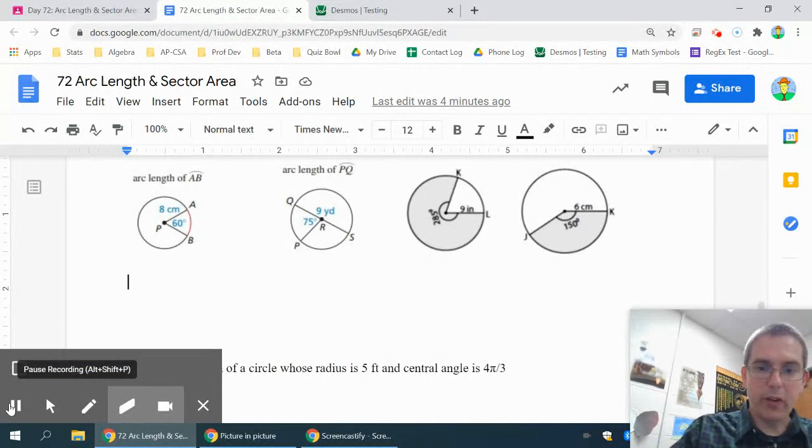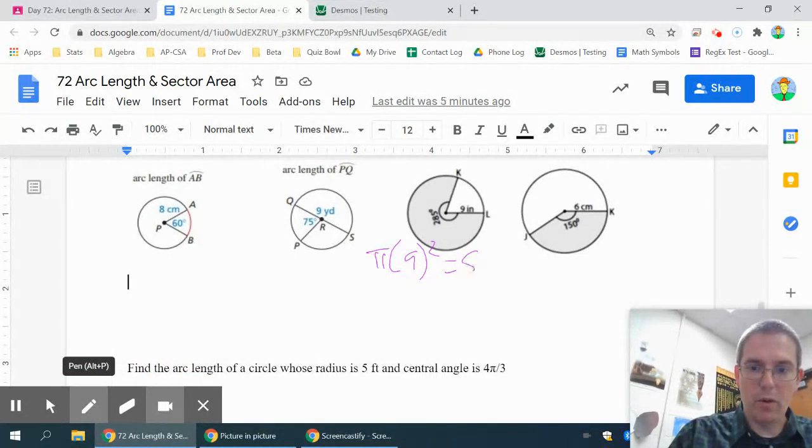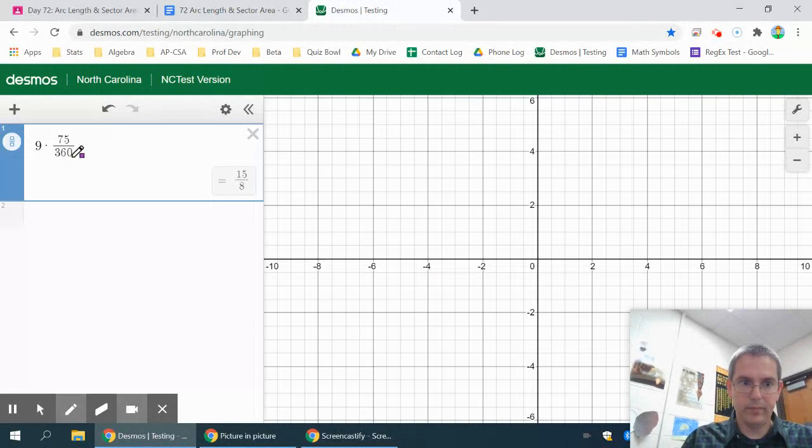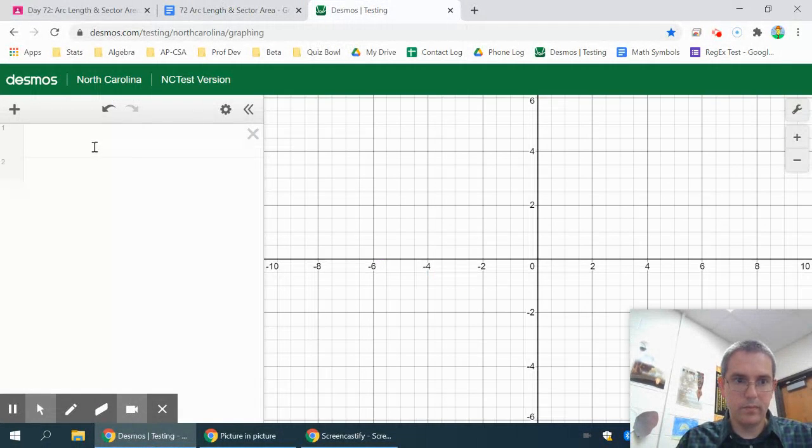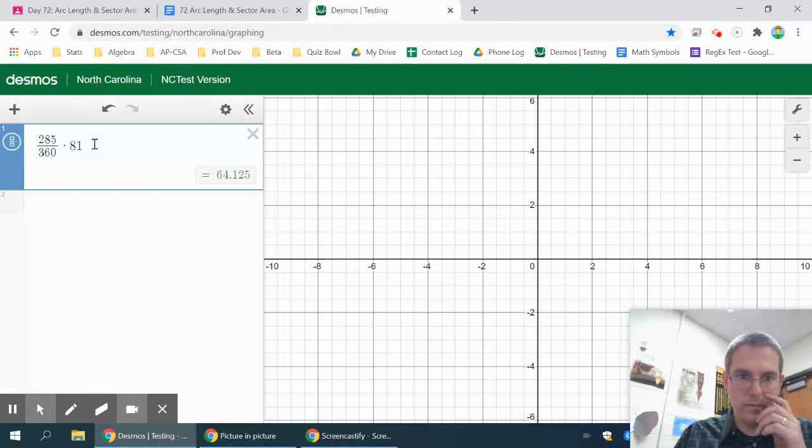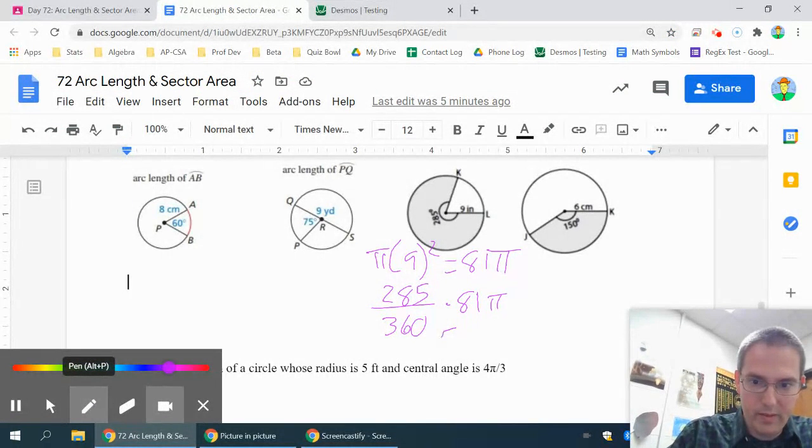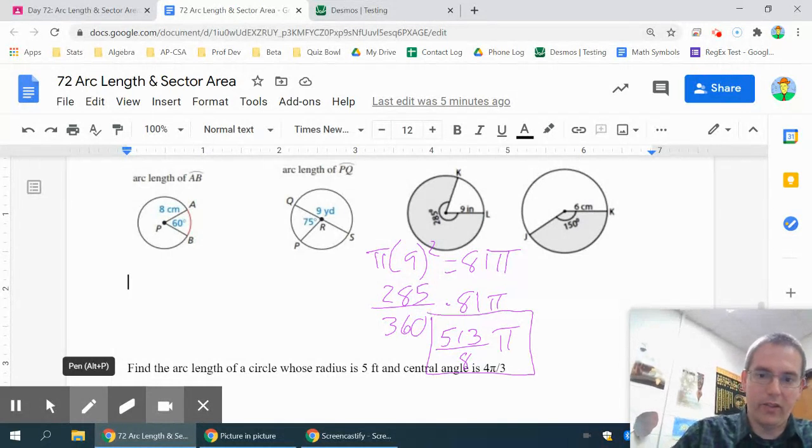Okay, on the next one, sector area. Remember, start with the area of a circle formula, which is πr². So I have π times 9 squared is 81π. Then I'm going to have 285 over 360 times 81π. That's going to be 513 over 8. That's a little ugly, but that is the answer in terms of π, 513 over 8.